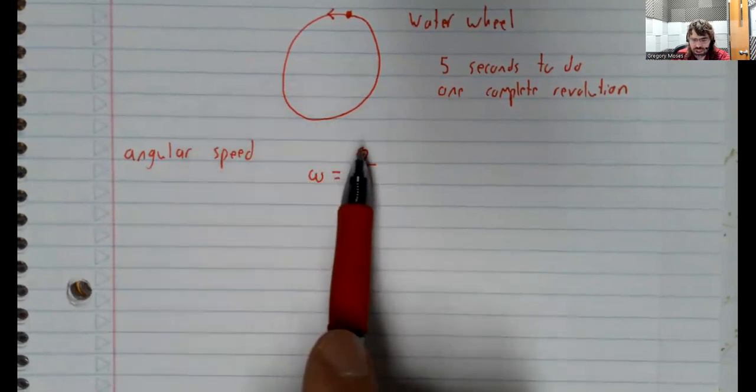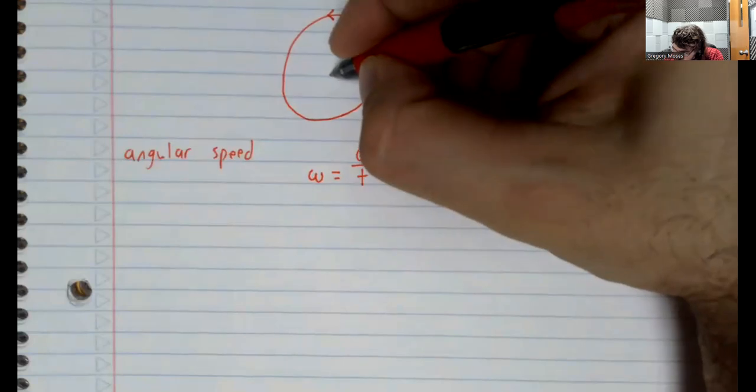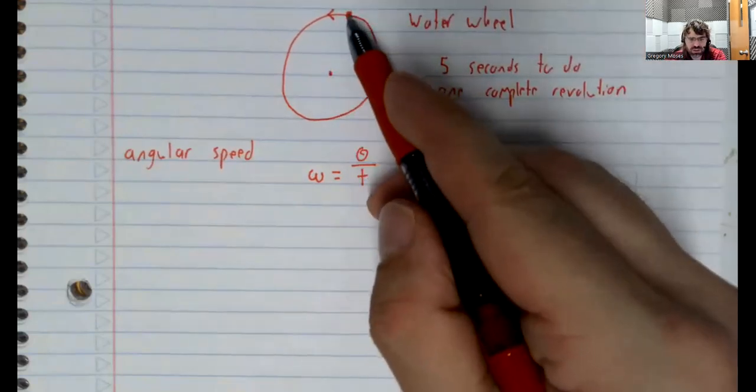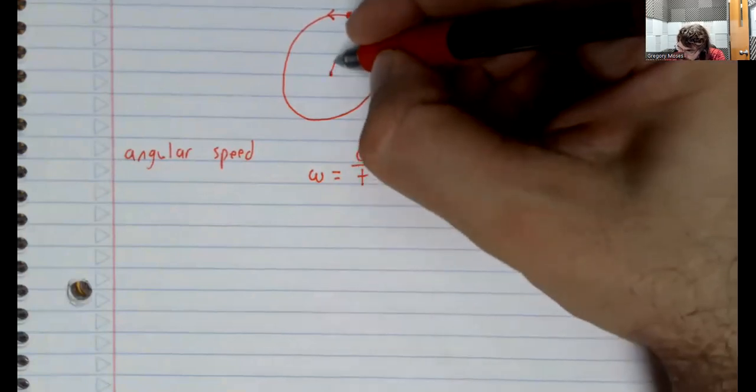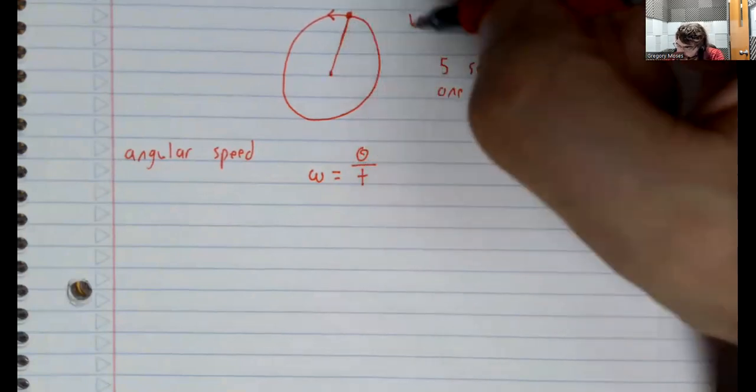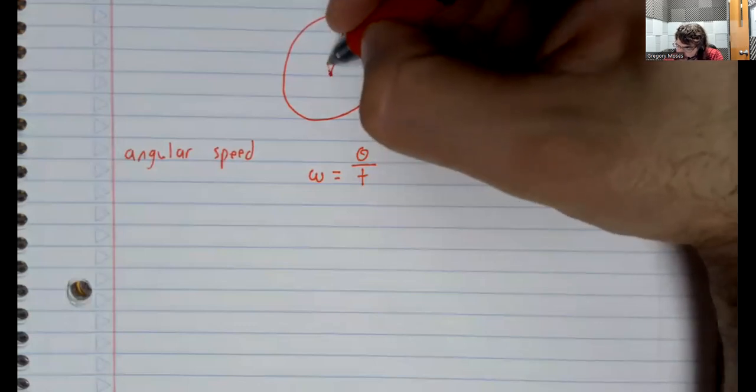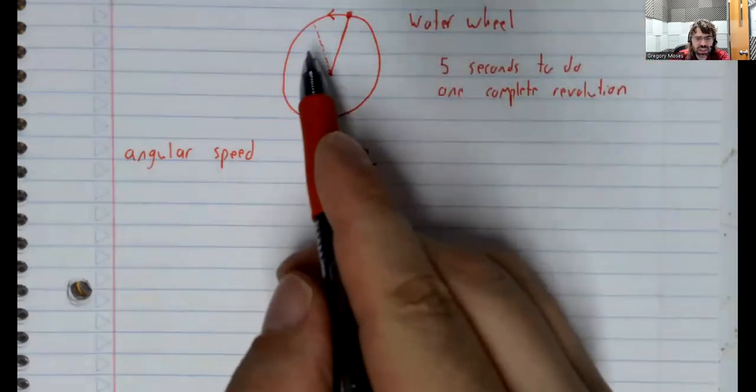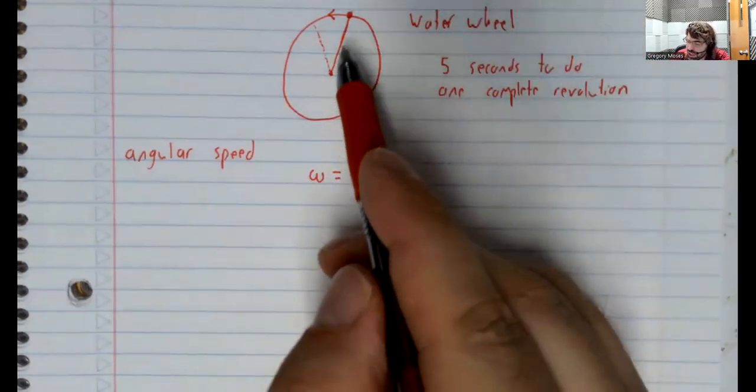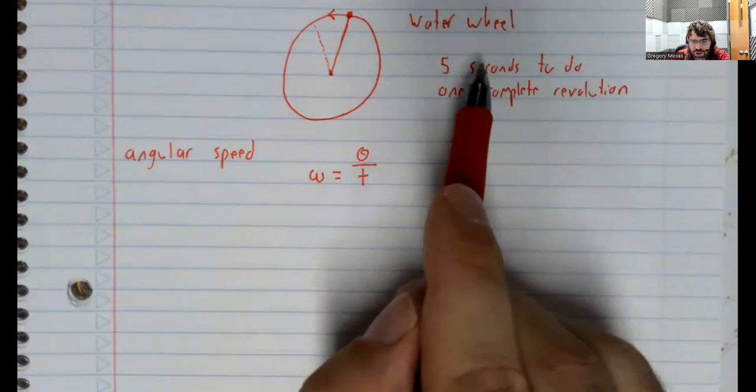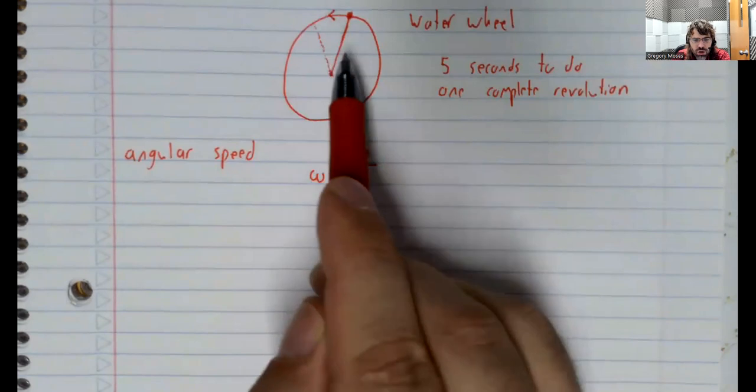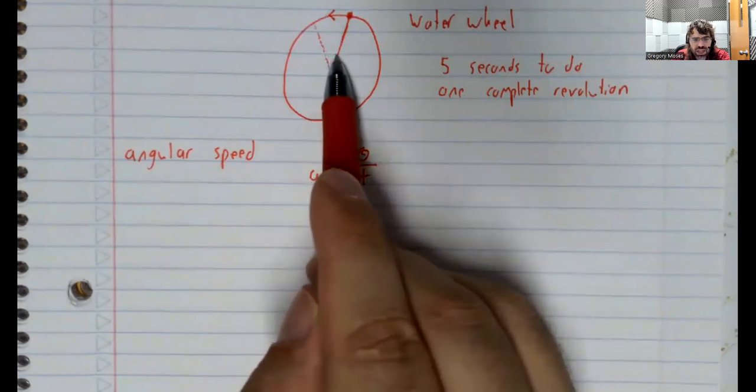This theta here, if this is the center of the wheel, and this is the starting point, then this theta is the angle between the starting point and the ending point. Like, if over five seconds, the point moved from here to here, we would use this angle theta in the formula.